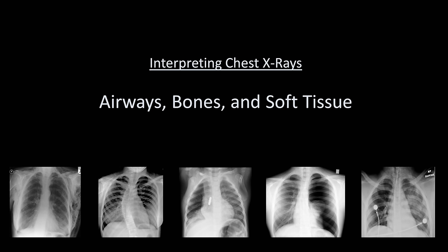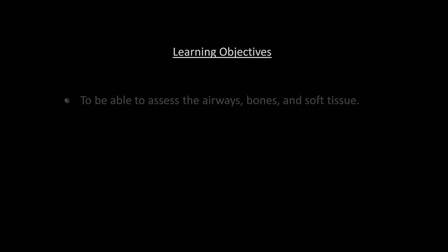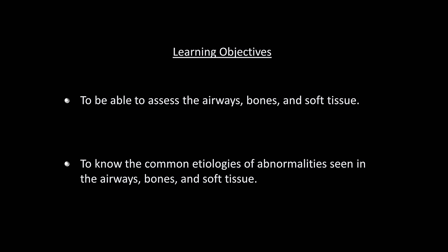This is the fourth video in this series on how to interpret a chest x-ray, and the topic is the airways, bones, and soft tissues. The learning objectives are to be able to assess those structures on x-ray and to know the common etiologies of abnormalities seen in them.